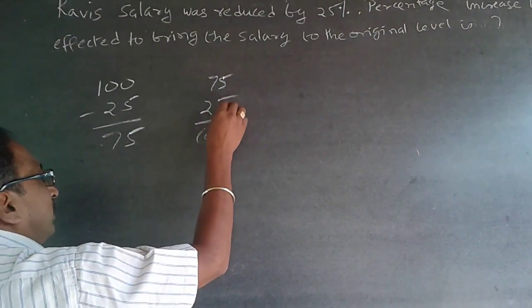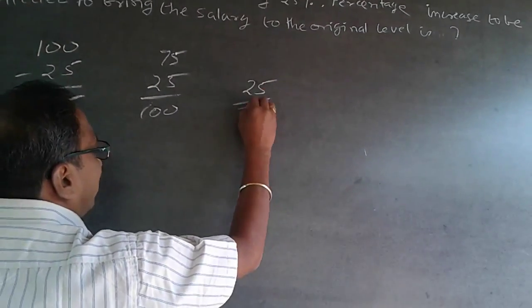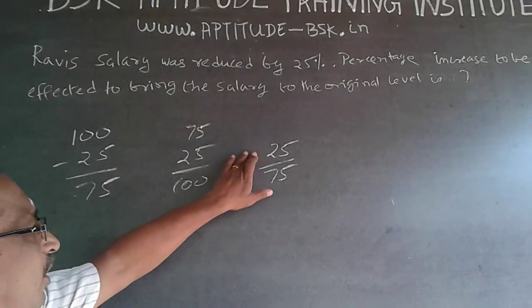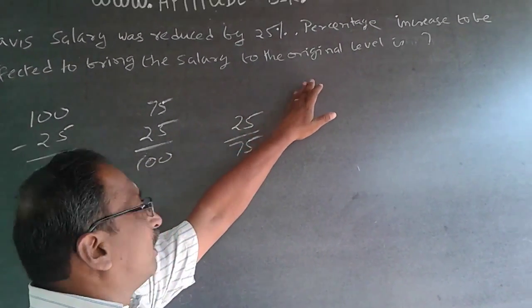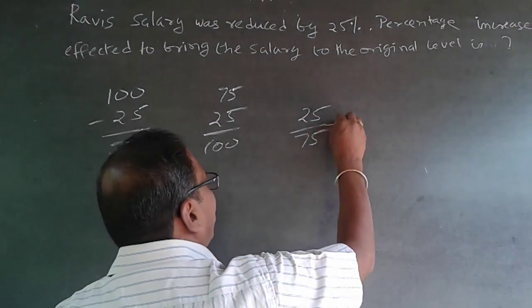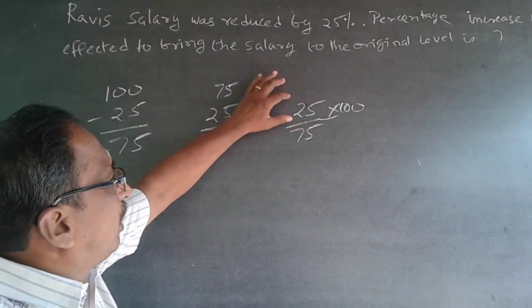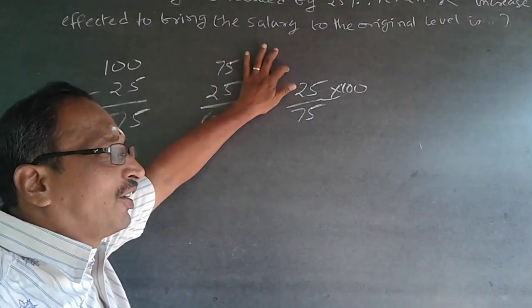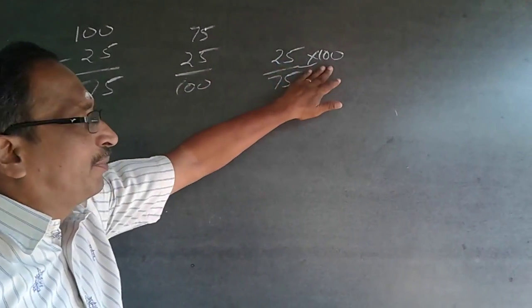But what is happening is I am increasing 25 on a base figure of 75. The question is percentage increase: if for 75 the increase is 25, how much will it be if it's going to be 100? The value increase will be 25, but on 75 it will be 25 by 75.